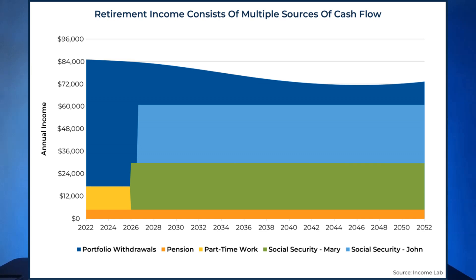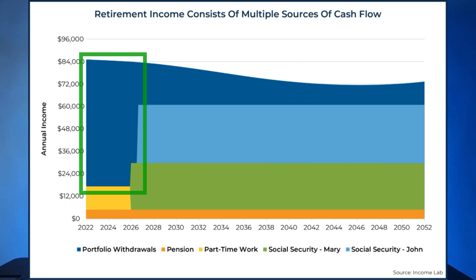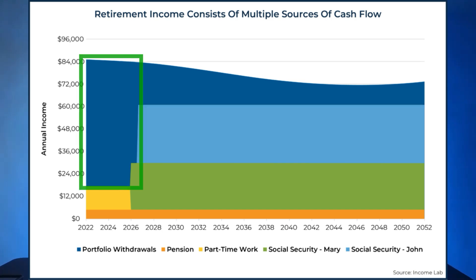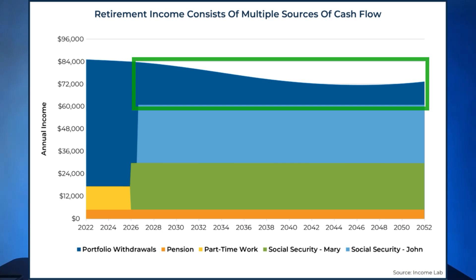Justin Fitzpatrick and myself have referred to one common distribution pattern as the retirement distribution hatchet. With a hatchet-shaped distribution pattern, portfolio distribution rates tend to be higher in the earlier years of retirement, while Social Security or pension income might be deferred into the future. However, once these income sources kick in, portfolio distribution rates drop significantly. It's not uncommon to see, say, 8% portfolio distributions in the early years that might fall to 2% once Social Security kicks in.